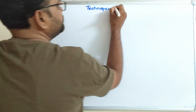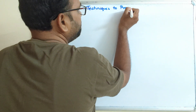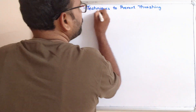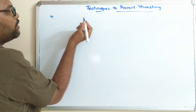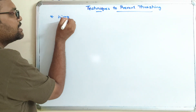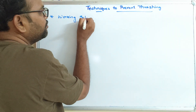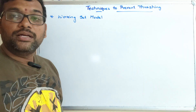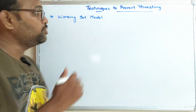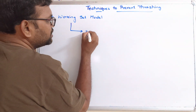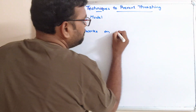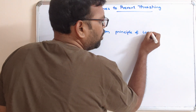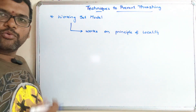The two techniques to prevent thrashing are: first, the Working Set Model, and second, Page Fault Frequency. The Working Set Model is based on the principle of locality, also called the locality model.